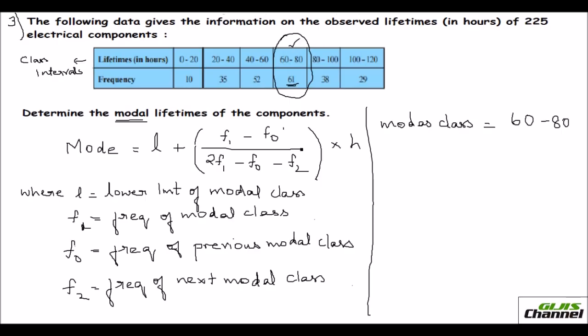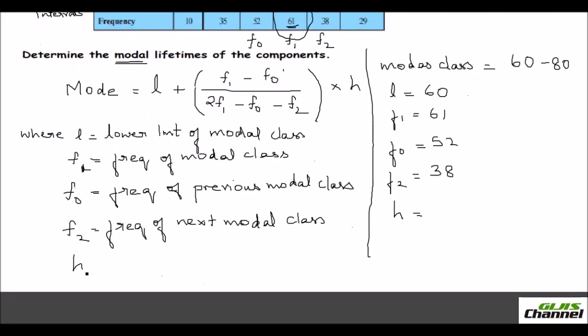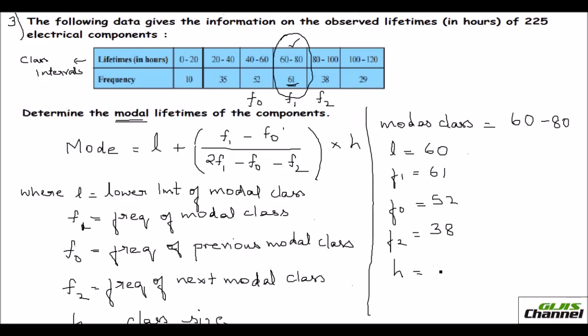The class interval you have to write 60 to 80. So your L will be lower limit, which is 60. Your F1 is equal to the frequency of this modal class, that is 61. F0 is equal to the frequency, this is your F1. Now F0 is the frequency of previous modal class, which is 52. And F2 will be the frequency of the next modal class. So your F2 is equal to 38. H is class size. The class size is 20.